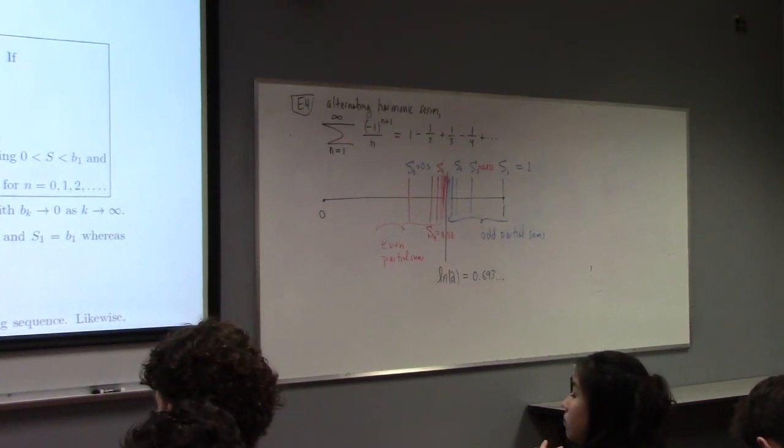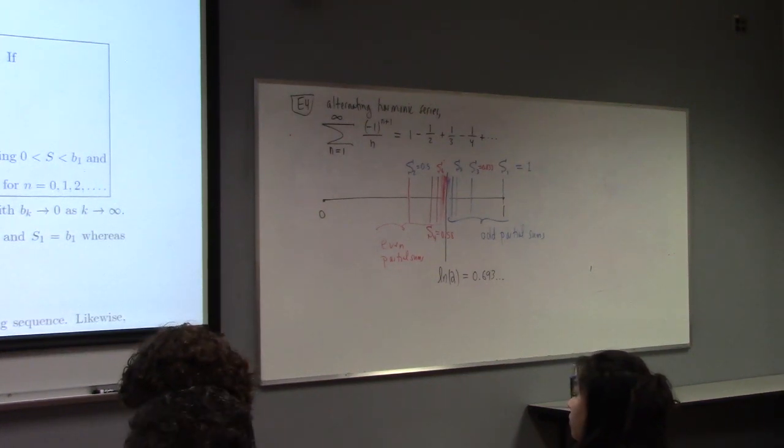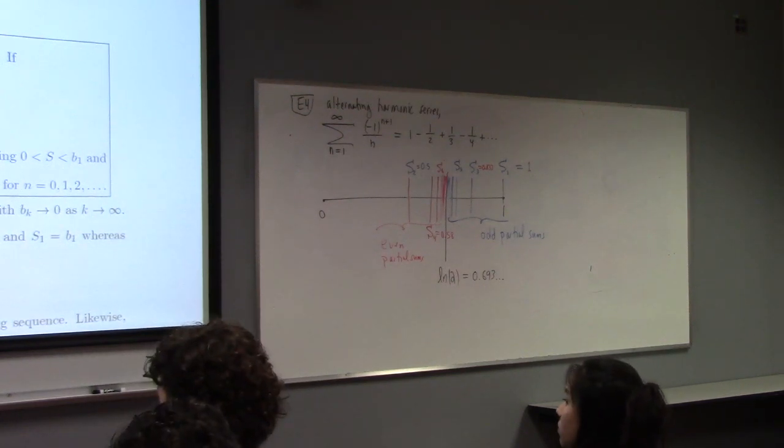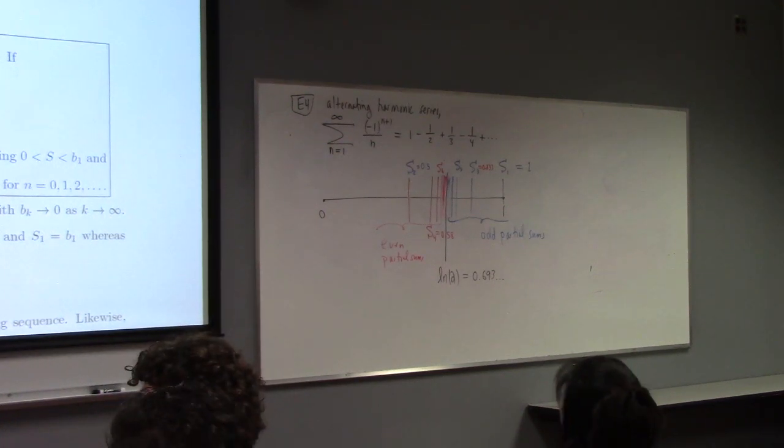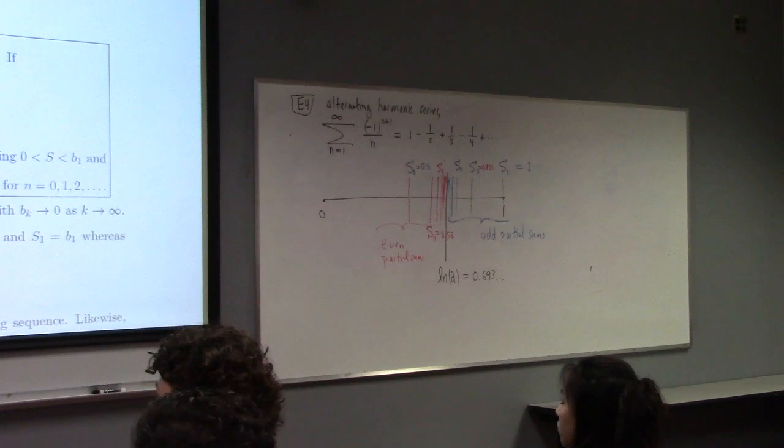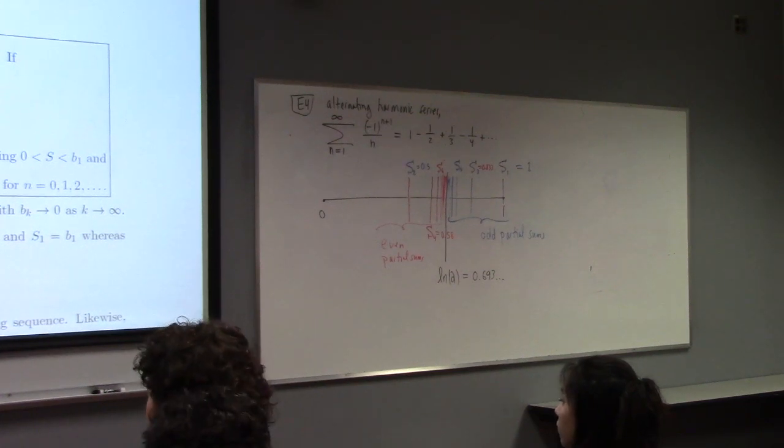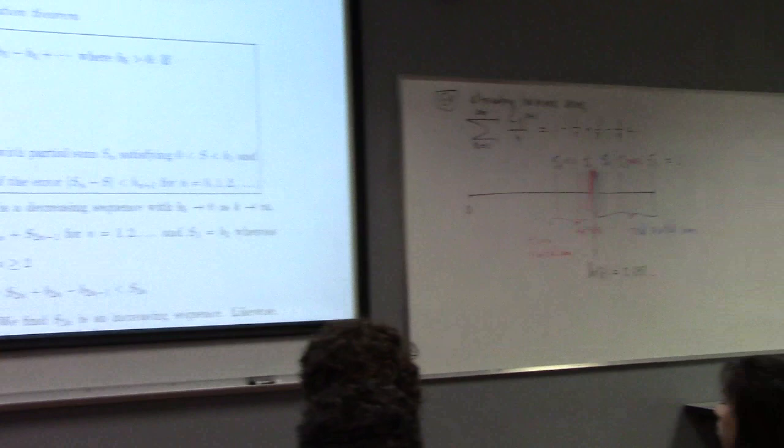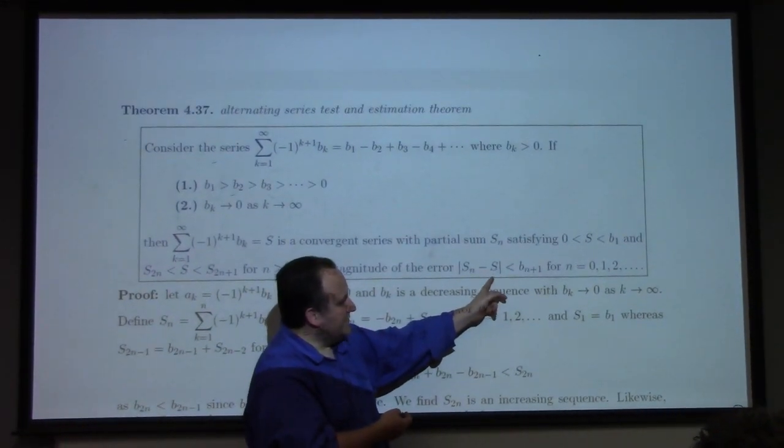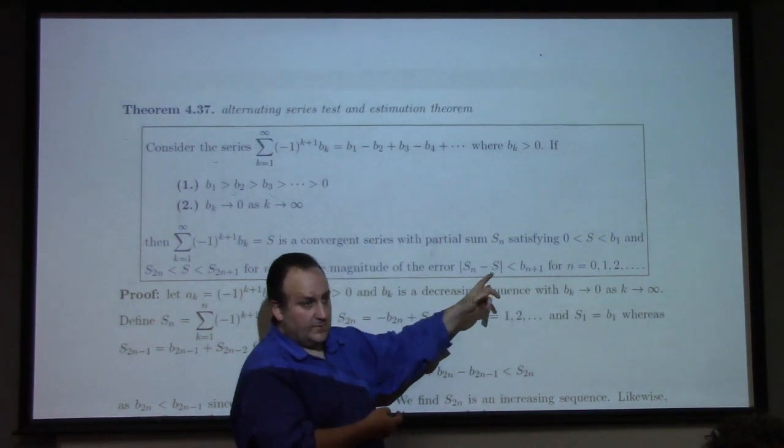More than that, though, it also comes with a super nice error estimation. This is very cool. And you could see this in the example, right? The even partial sums are less than the actual sum are less than the odd partial sums. So the actual answer for the series, what it sums to, is between the even and the odd partial sums, and you can get as close as you want to the answer by just going sufficiently far out. If you put these two things together, the error in the nth partial sum, it has to be at most the next term that you haven't used.